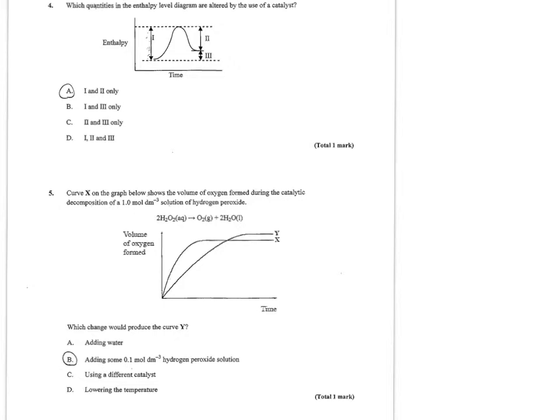Which change would produce curve Y? What you have to notice is curve Y has a slower rate but also a slightly greater yield. When you look at the four choices, they would all produce a slower rate. Adding water dilutes it. Adding 0.1 molar hydrogen peroxide also dilutes it. Different catalyst could slow it, and lowering temperature would slow it. The question is, which would also affect yield? Only the 0.1 molar hydrogen peroxide would affect yield because it would add more of your limiting reactant as well as slowing the rate. So only B would do both.